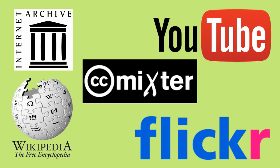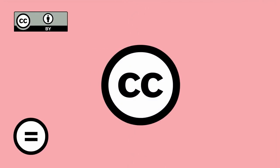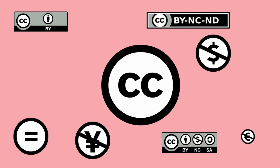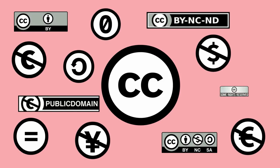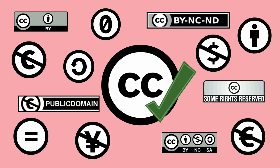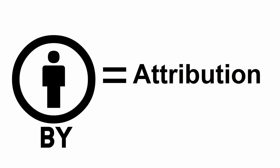When visiting these sites, look for works that have these symbols for a license. If your image, audio file, or video has one, great — you just found a Creative Commons licensed work. All those different symbols and letters tell you how you can or cannot use the work.